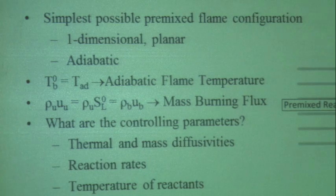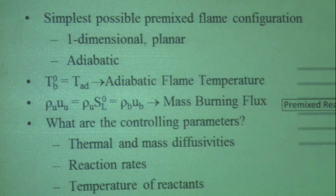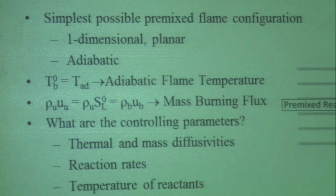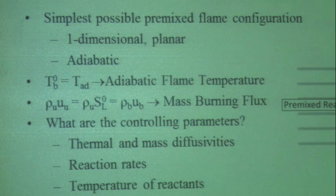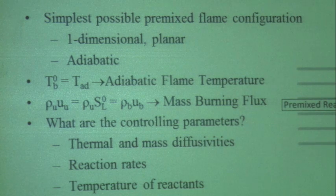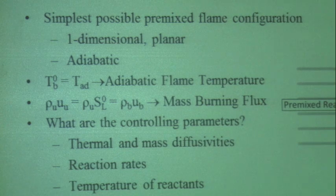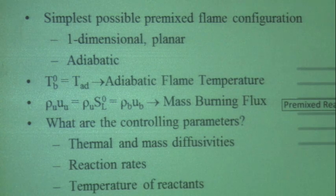A simple one-step kinetics description of flat premixed flames is that you have two zones: a preheat zone and a reaction zone. The preheat zone has no reaction — it just heats the reactants up to the point where high activation energy kinetics can really take off. The reaction zone is basically a highly non-adiabatic reactor where it takes the reacting mixture and gives all the heat generated back into the preheat zone to preheat the mixture. You have this synergistic relationship between the preheat zone and the reaction zone to take an essentially chemically frozen mixture and bring it to equilibrium.